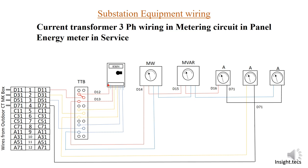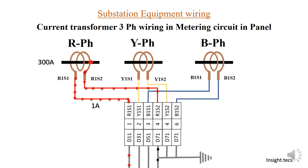When the energy meter is in service, the animation shows the current flow for R-phase; similarly you can understand for yellow and blue phase. Now let us understand how the current flows when the energy meter is out of service. Through the TTB, you can see that it is possible to bypass the energy meter when you want to perform any testing. The current flows from d11 and comes back into d71, and this animation shows how d11 comes into the panel and the current flows through the circuit and returns as d71.